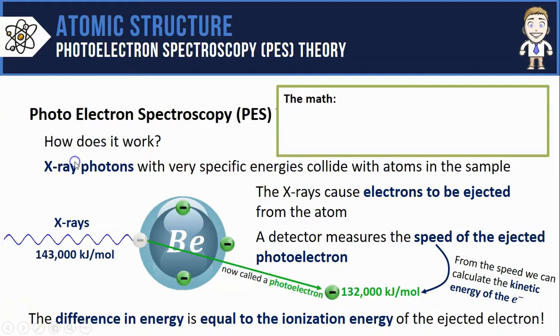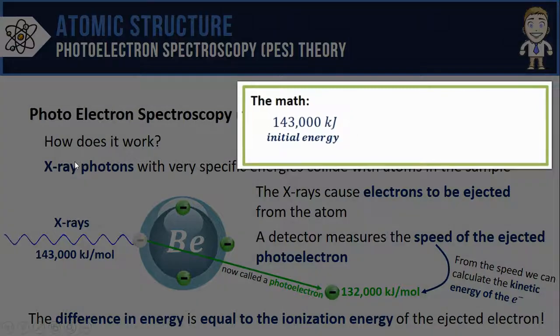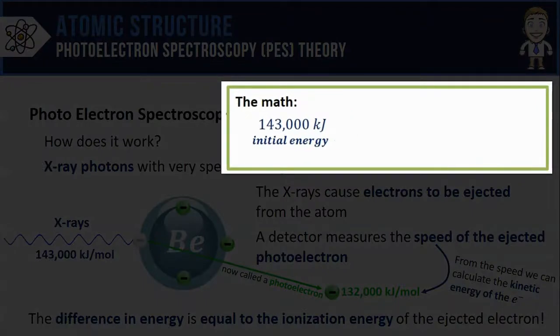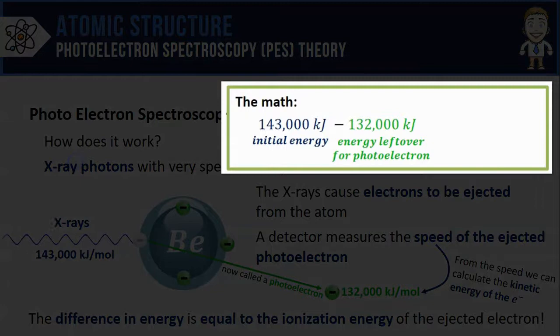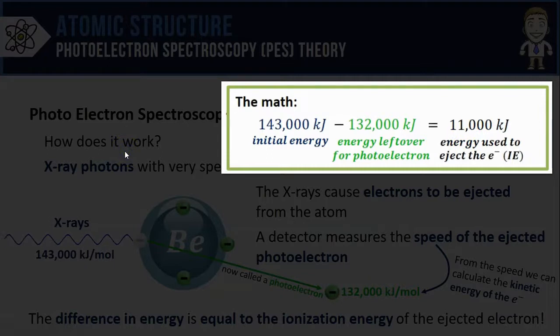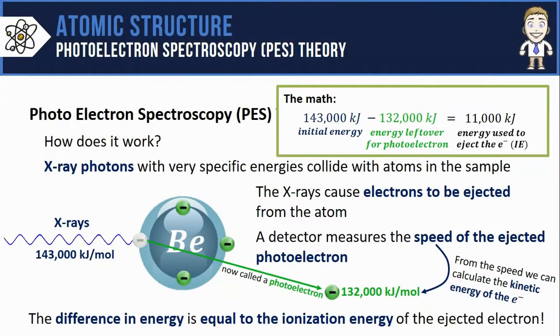Here's the math behind how it works. We started with 143,000 kilojoules of initial energy. If you subtract out the energy that's left over for the photoelectron, you can calculate that 11,000 kilojoules was lost in the process. That's the energy that was used to eject the electron, or otherwise known as the ionization energy.